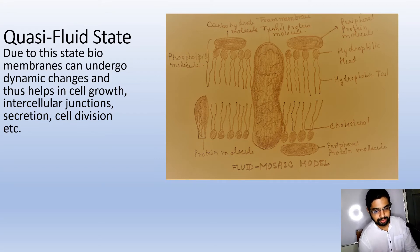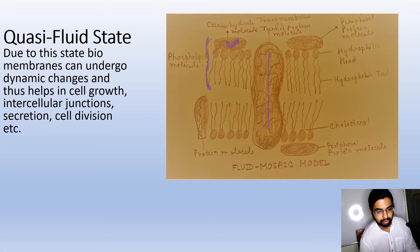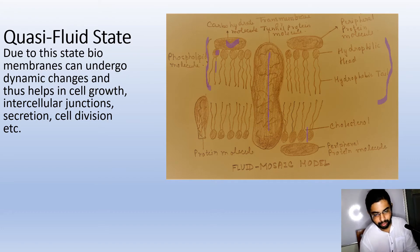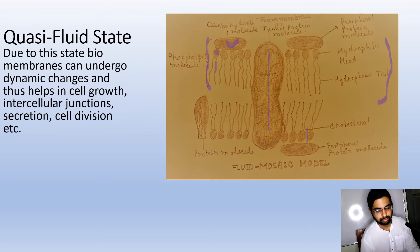This is the actual fluid mosaic model. You can see the transmembrane or tunnel protein, carbohydrates forming glycoproteins or glycolipids, the phospholipid molecules with hydrophilic heads and hydrophobic tails, cholesterol present between the phospholipid heads, peripheral proteins on the outside, and intrinsic proteins — some of which serve as tunnel or transmembrane proteins.